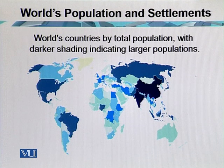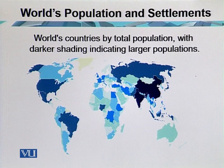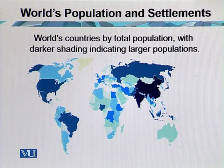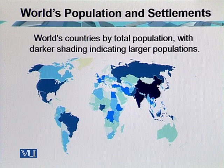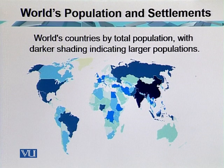Some indicators suggest that the worst may be over — that the explosive population growth of the 20th century will be followed by a marked and exhilarating slowdown during the 21st century. But the number of countries whose population has not only stopped growing but are actually declining is notable, and we have the example of Europe.